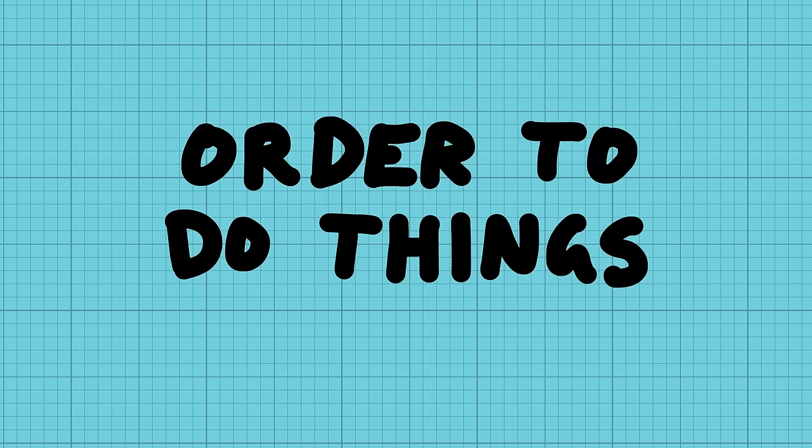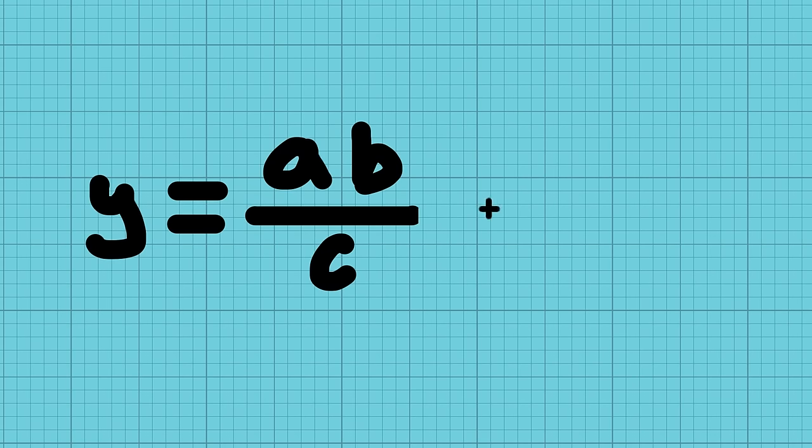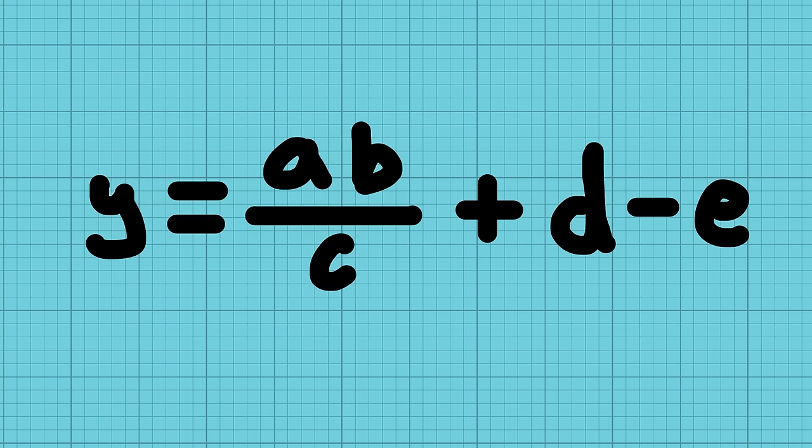When you plug numbers in and solve the equation, you have to know what order to do things in. And this is the next step that you need to work out after you've identified the variables and constants. Knowing what order you do the mathematical operations in an equation helps you get your head around them, and there's some rules about how it's done.